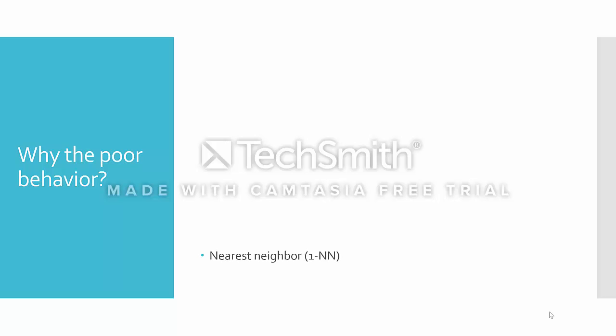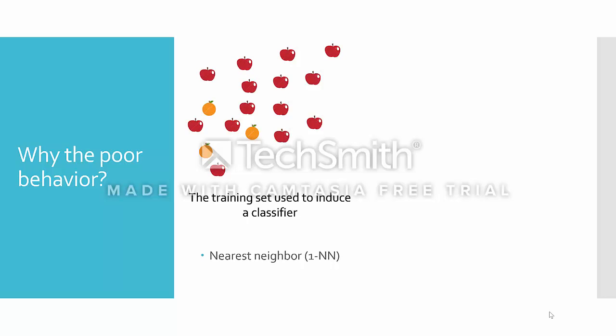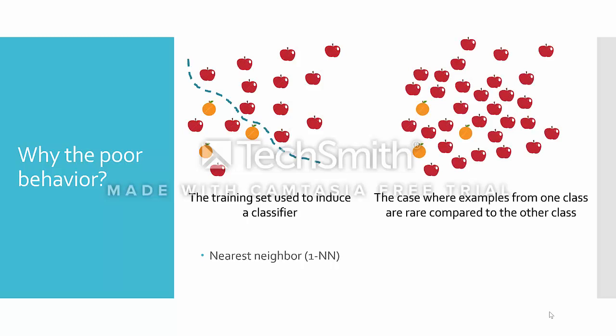But why does an imbalanced training set hurt performance? In this paper, the nearest neighbor rule is used to classify examples, where classifying a specific item depends largely on its neighbors. Because the number of apples is more than the number of oranges, oranges tend to have close apple neighbors. As the noisiness of the domain grows, so does the likelihood that the nearest neighbor of any orange is an apple, leading to many orange examples being misclassified. The paper also explains how using a Bayesian classifier or a decision tree will also have poor behavior in such circumstances.